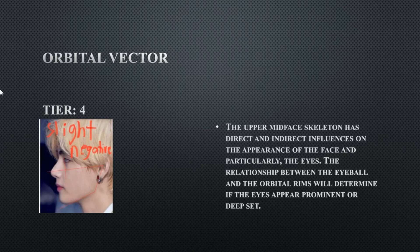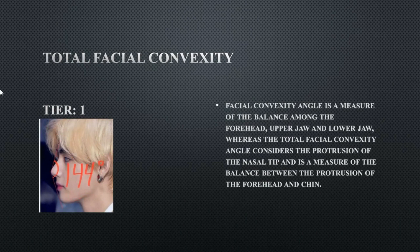His orbital vector is slightly negative, which means his eyes will look more bulgy or buggy. You want the orbital rims to go past the actual eye — that protrusiveness of the bone underneath the eye makes the eyes look more deep-set. This would be a slight flaw.